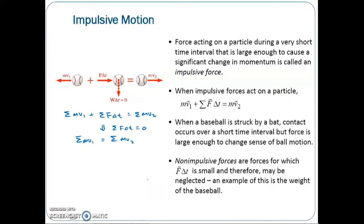When the total momentum is conserved, this can be demonstrated by the example of two particles moving freely that collide with each other. In this case the total momentum is conserved; however, the total energy is generally not conserved. The condition summation of F·Δt equals zero occurs either when the resultant of external forces is zero, when the time interval Δt is very short, or when the external forces are non-impulsive.